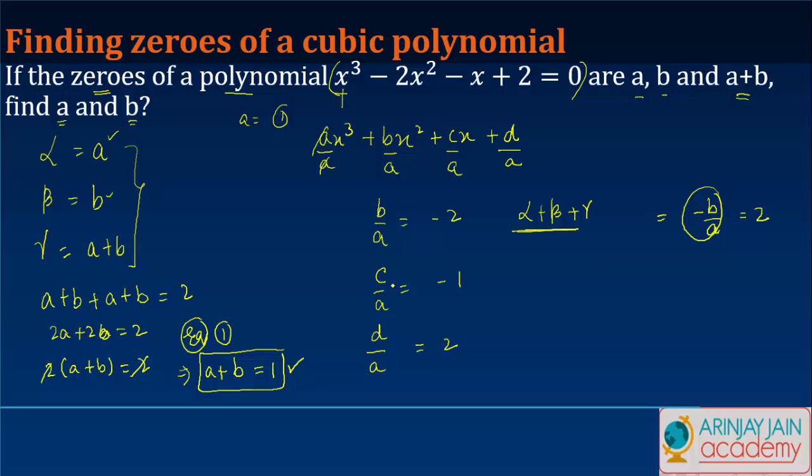Similarly, c/a equals αβ + βγ + αγ, which equals -1. What is αβ here? It's ab. So ab + b(a+b) + a(a+b) = -1.